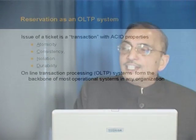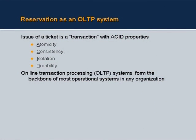A transaction is expected to have what is known as ACID properties — Atomicity, Consistency, Isolation, and Durability. Atomicity means that if a transaction has multiple steps, either all those steps are completely conducted satisfactorily, or nothing is conducted at all. Even if there are five steps, all five together form an atomic transaction.